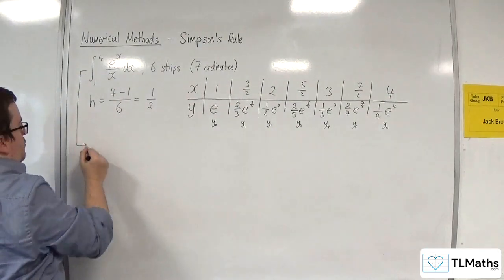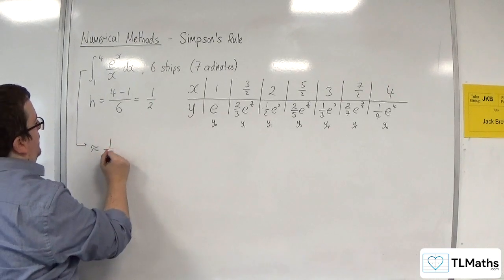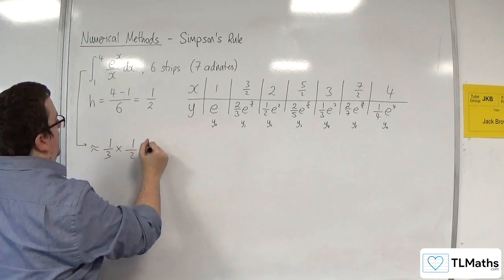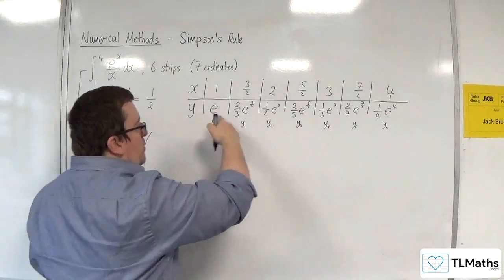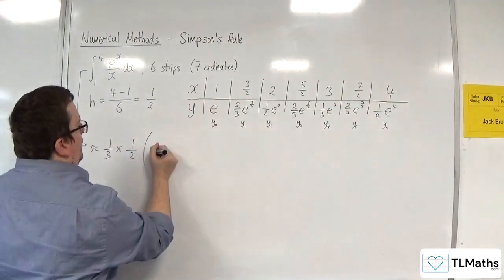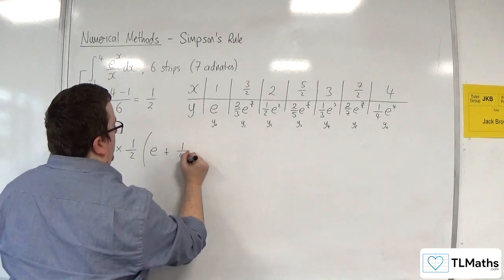So this approximates to 1 third times h, which is the 1 half, times by we get y0 plus y6, the first plus the last, e plus 1 quarter e to the 4.